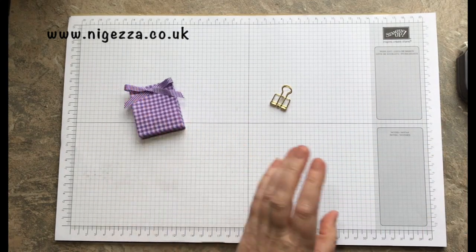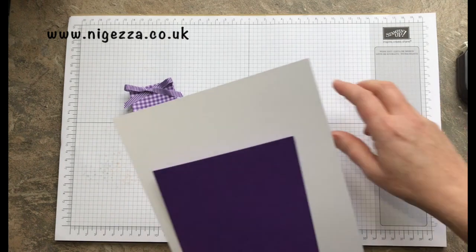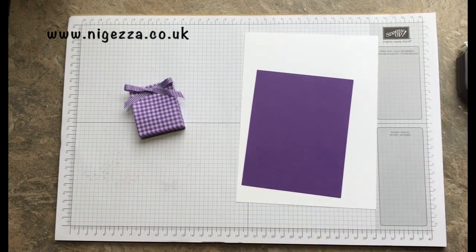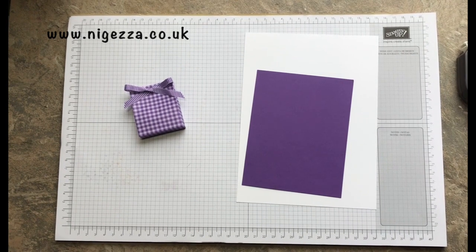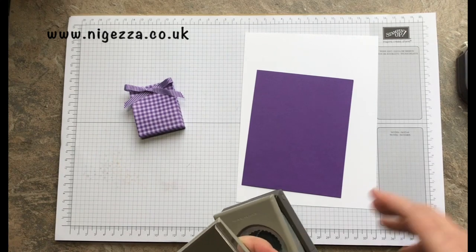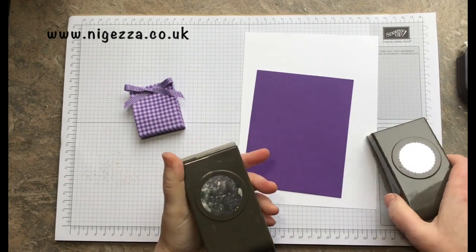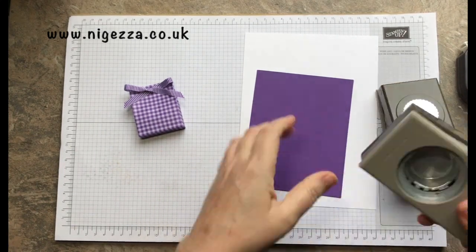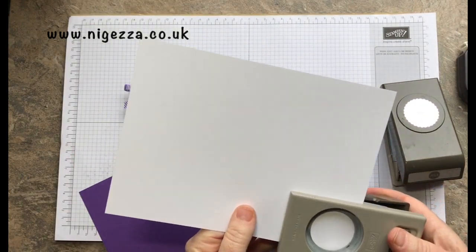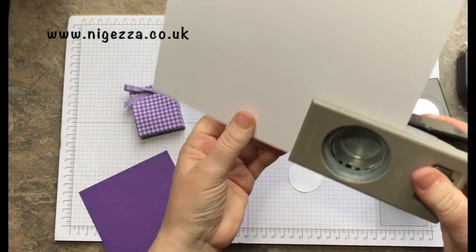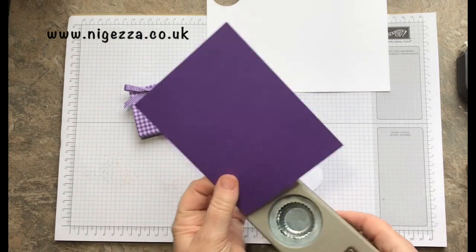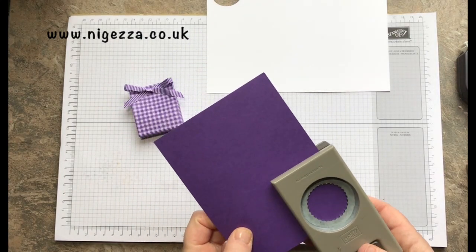And then to decorate the front, I've got some whisper white and some gorgeous grape and I've left my punches over on my desk. I've got a one and a half inch circle and a one and three eighths scallop, so I'm going to cut a whisper white circle.